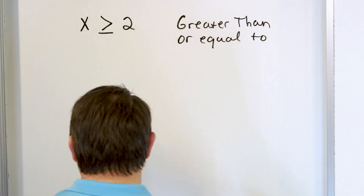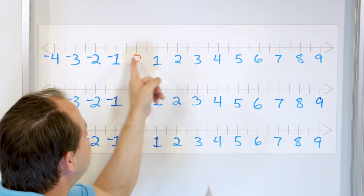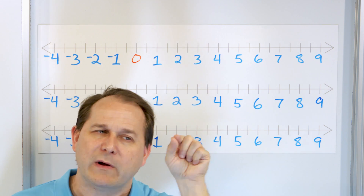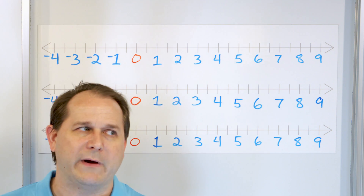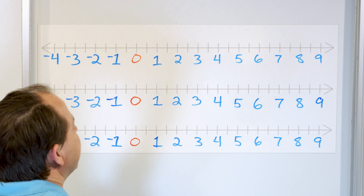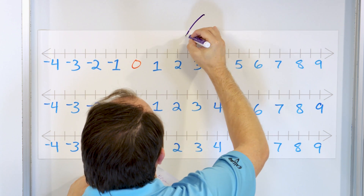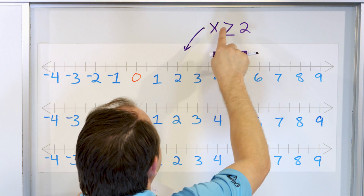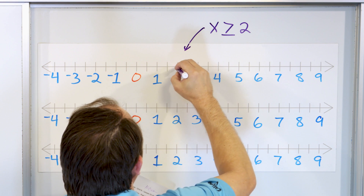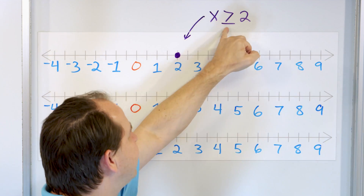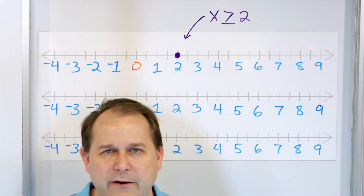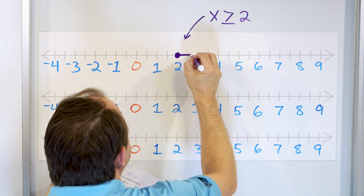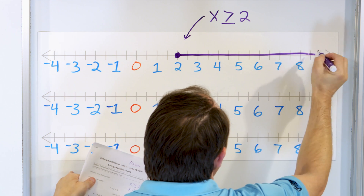Now I want to show you that typically what we do when we graph these inequalities is we put them on a number line. In a minute we're going to solve an inequality using the rules of equations to solve for x, and the answers will always look like greater than or equal to. We always want to draw a picture of that. To represent x is greater than or equal to two, we put a solid dot at two to show two is included, and then shade to the right with a little arrow.